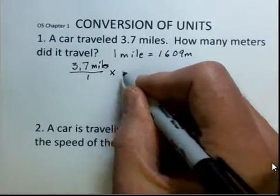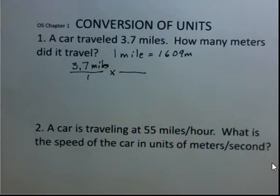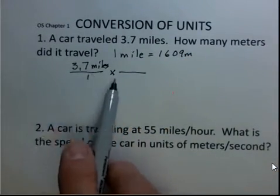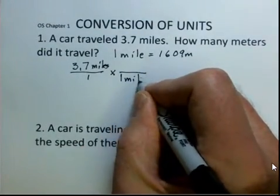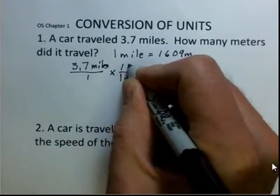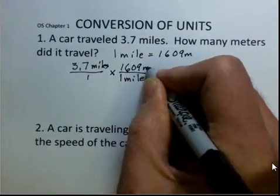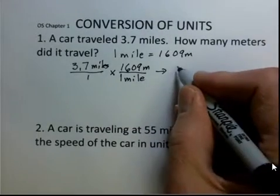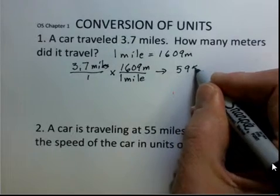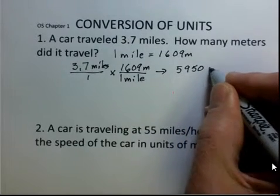And as I write now the conversion factor, I see that I have miles in the numerator. My conversion factor must have miles in the denominator to cancel off miles. And that leaves me the 1,609 meters in the top. And if you would use a calculator to complete this calculation, then you'd find 5,900. I'm going to round off to 5,950 meters.